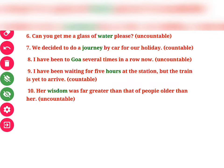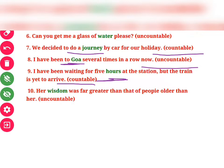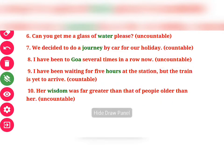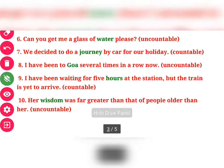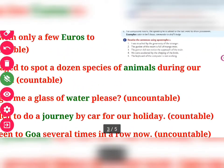Seventh: "We decided to do a journey by car." 'Journey' is a countable noun. Eighth: "I have been to Goa." 'Goa' is a noun — uncountable. Ninth: "I have been waiting for five hours." 'Hours' is a countable noun. Tenth: "Her wisdom was far greater than that of people older than her." 'Wisdom' is an uncountable noun. Exercise B is now completed.